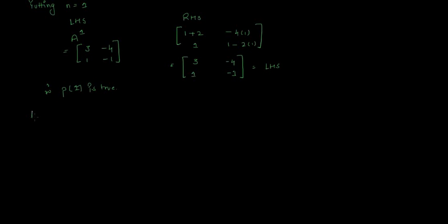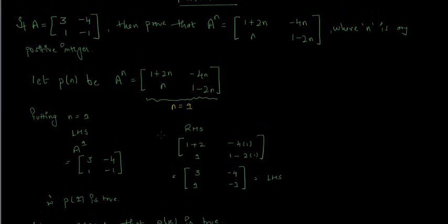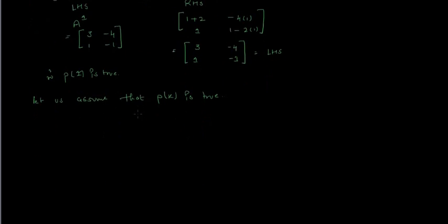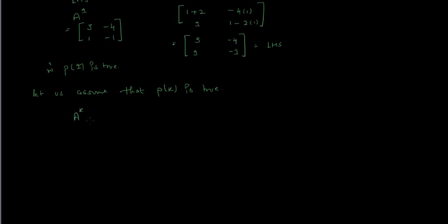The second step: let us assume P(k) is true. So wherever there is n, I'll put k instead. We get A raised to the power k equals [1+2k, -4k; k, 1-2k].